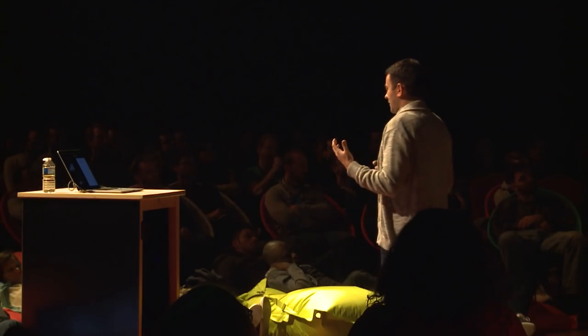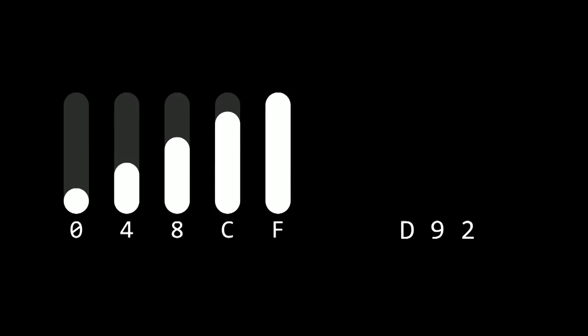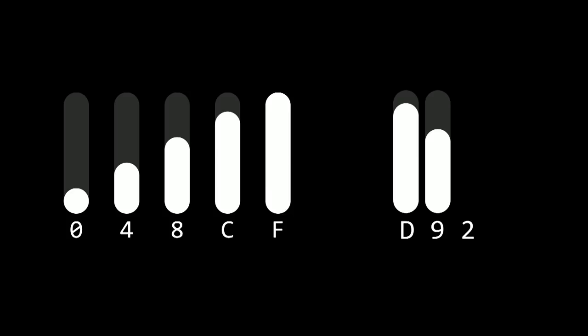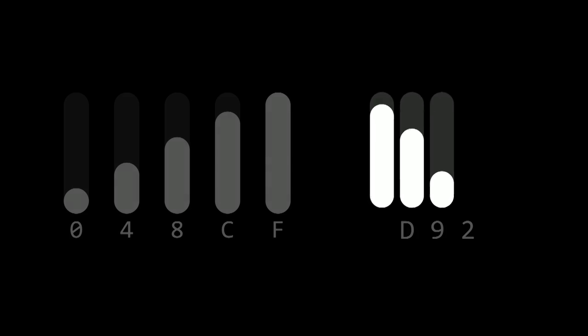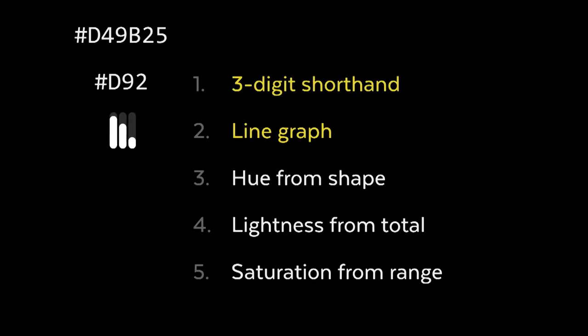Now we have an easy-to-digest form of the code: D, nine, two. With our basic understanding of hexadecimal characters, we can make a little line graph. This is the second step. We're going to map out our code: D, nine, two. D would be fairly high. Nine comes around the middle. And two is fairly low. And our second step is done.